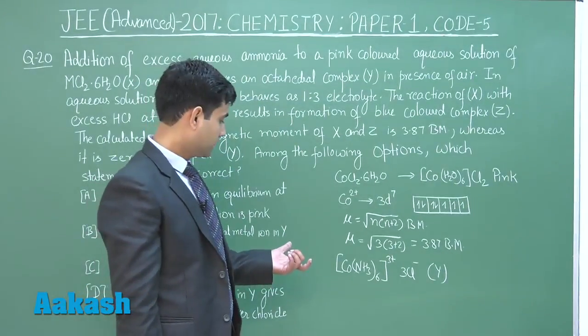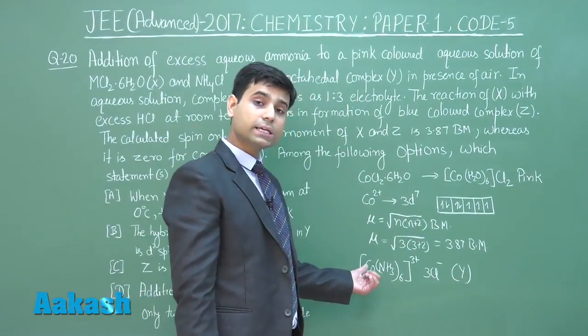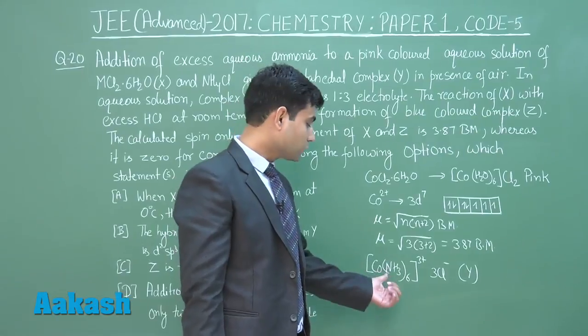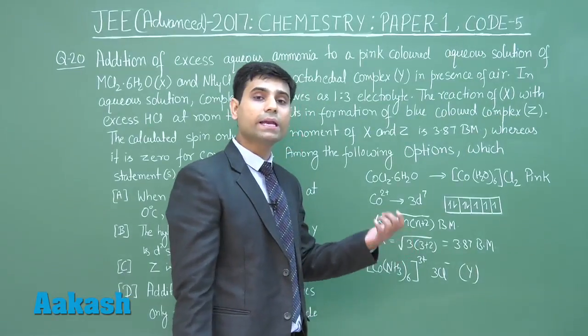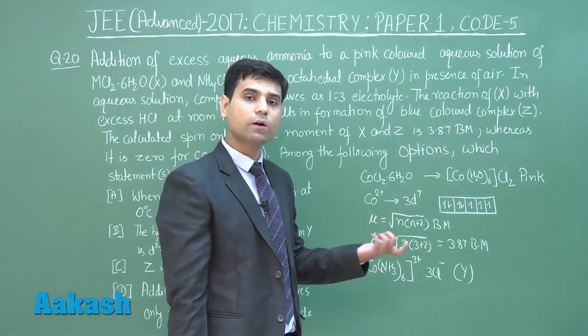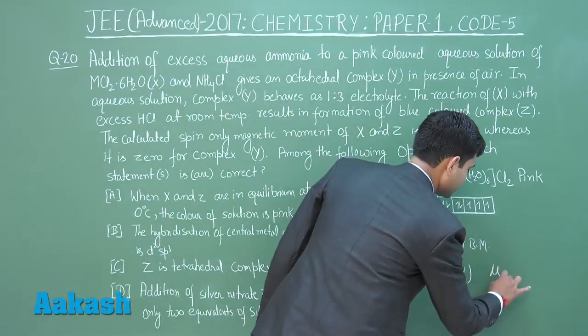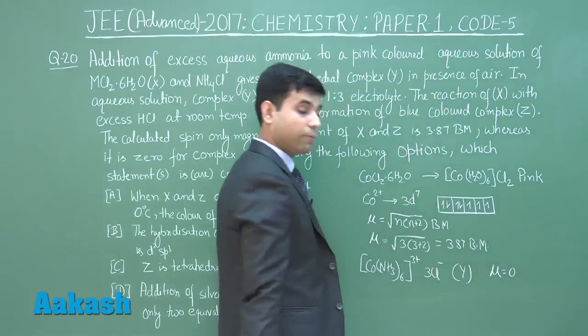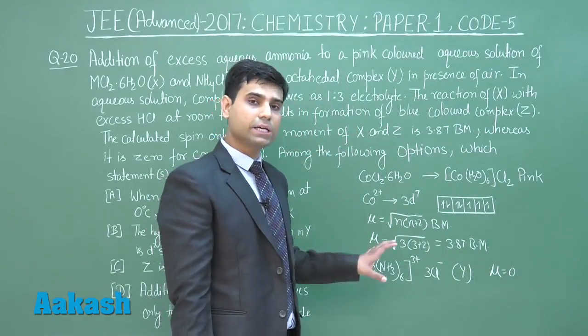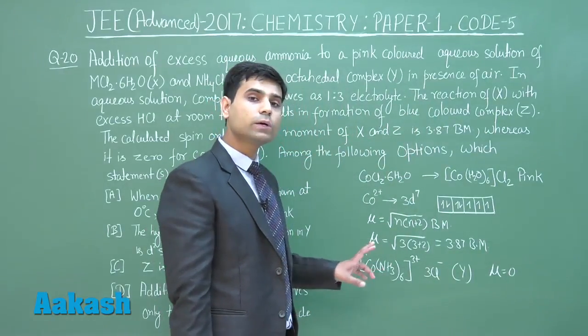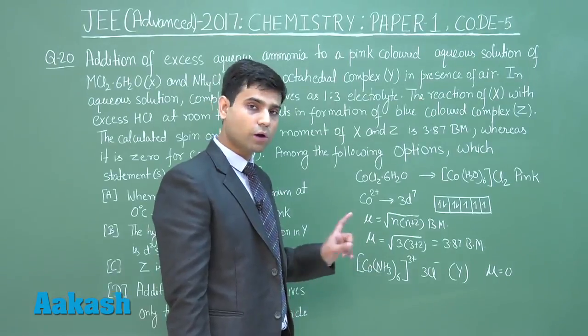For Y, Co3+ has 3d6 configuration and because of strong field ligand will not have any unpaired electron, so spin-only magnetic moment will be 0. If I calculate its hybridization, it will be d2sp3 because we have strong field ligand.